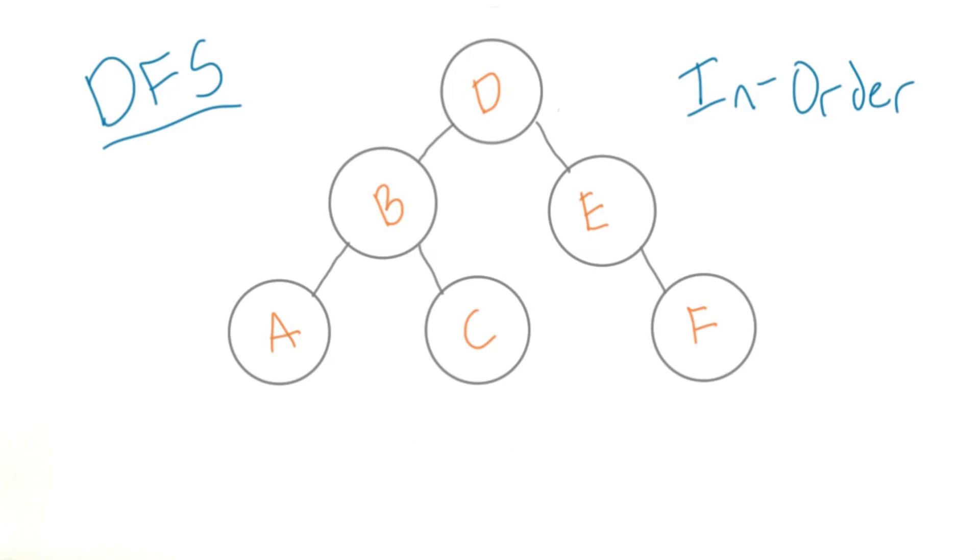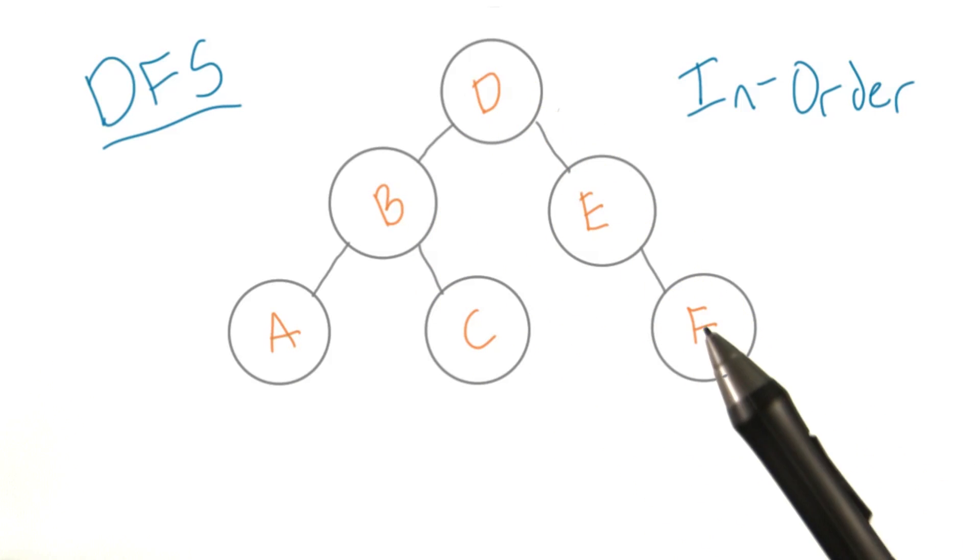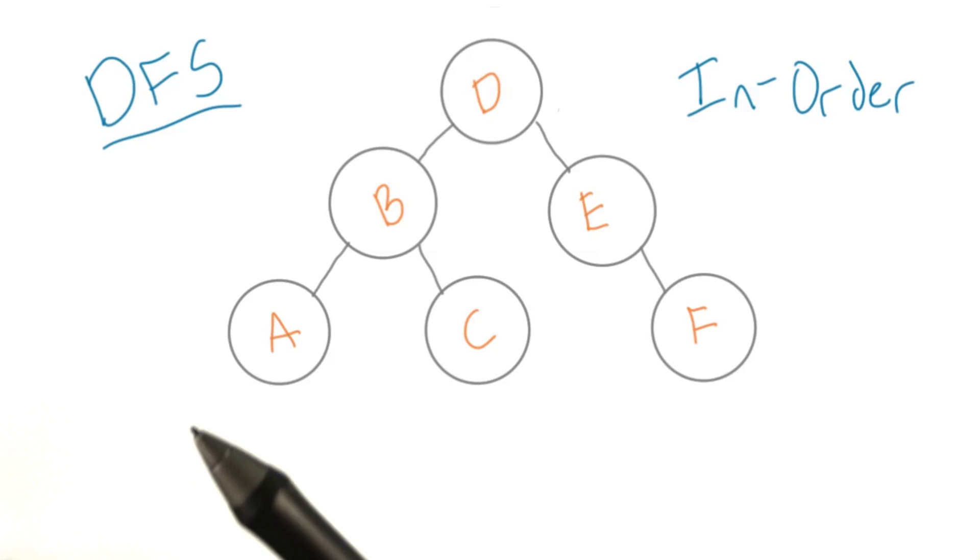The trick here is that we're moving through the nodes in the same order, since this is still a DFS and we need to explore all children first. However, this time we're going to check off the nodes in a different order. We're only going to check off a node when we've seen its left child and come back to it. Let's see what this looks like.